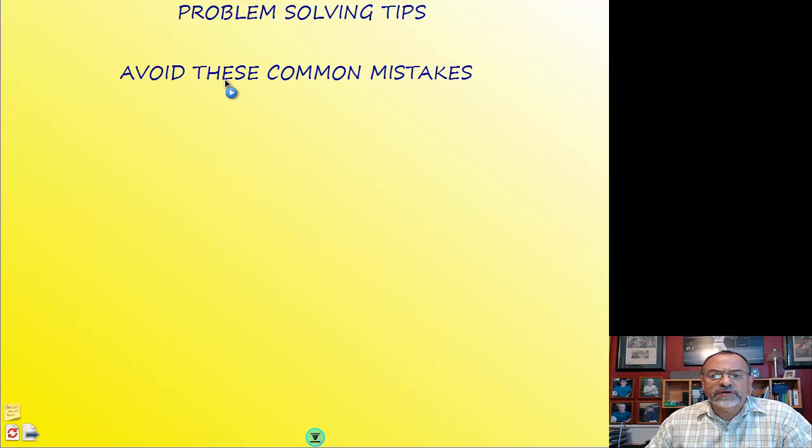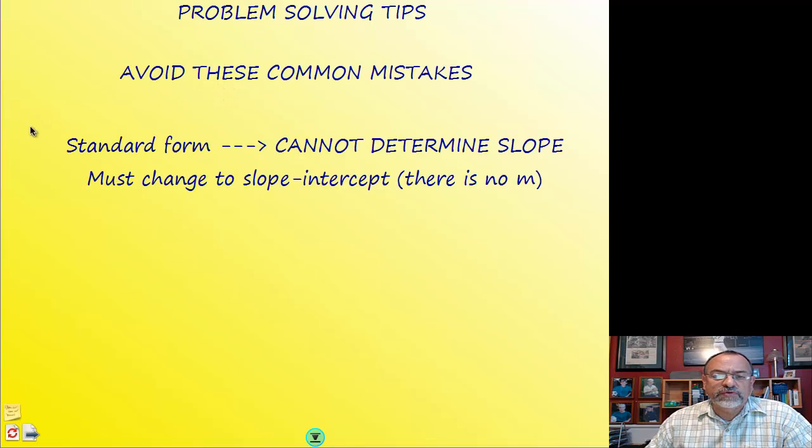One common mistake that I want you to avoid is to remember this: within standard form, you cannot figure out or determine what the slope is when it's in standard form. There's no m in standard form, there's no lowercase m which represents slope. The only way to determine slope if you begin with standard form is to change it into slope-intercept form,